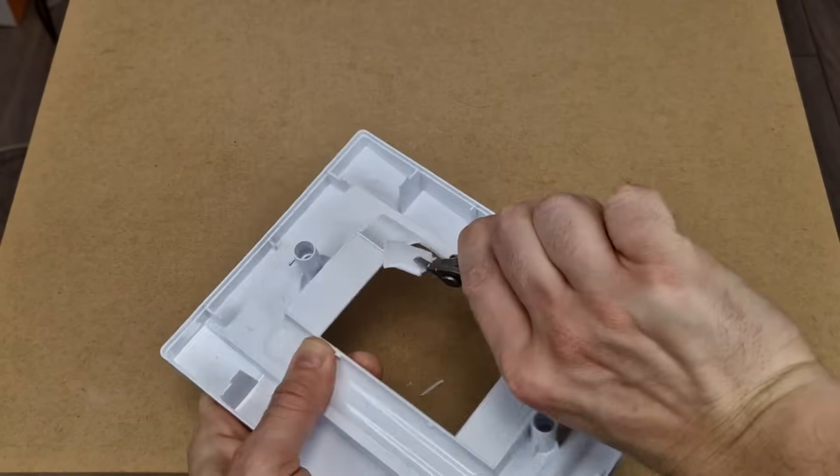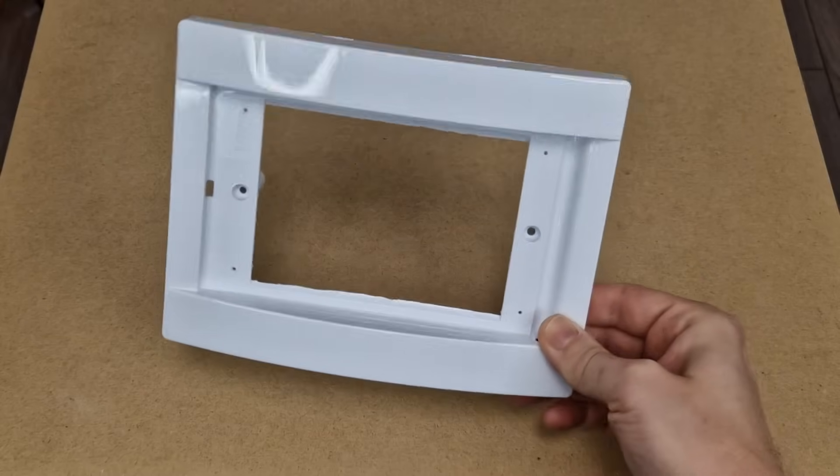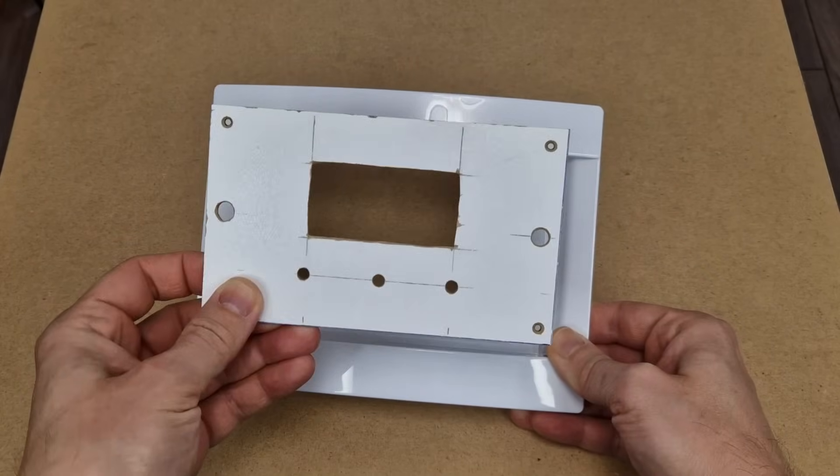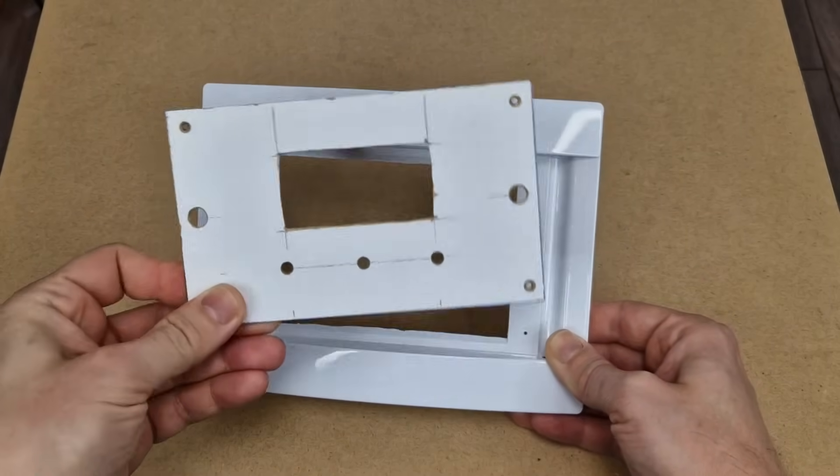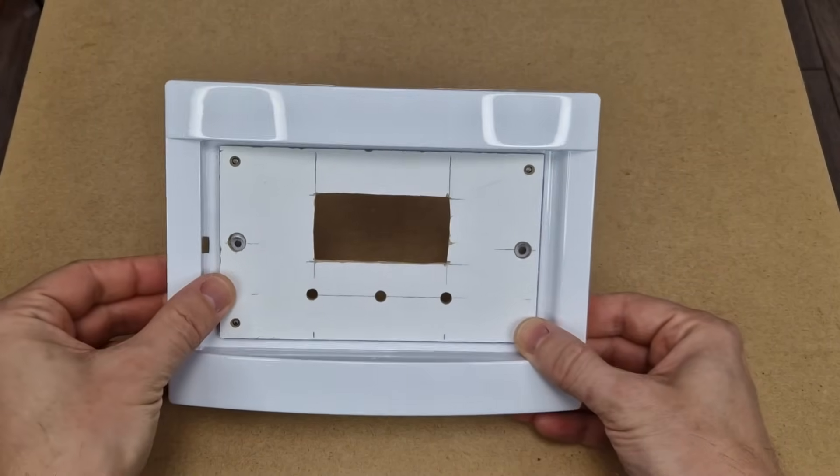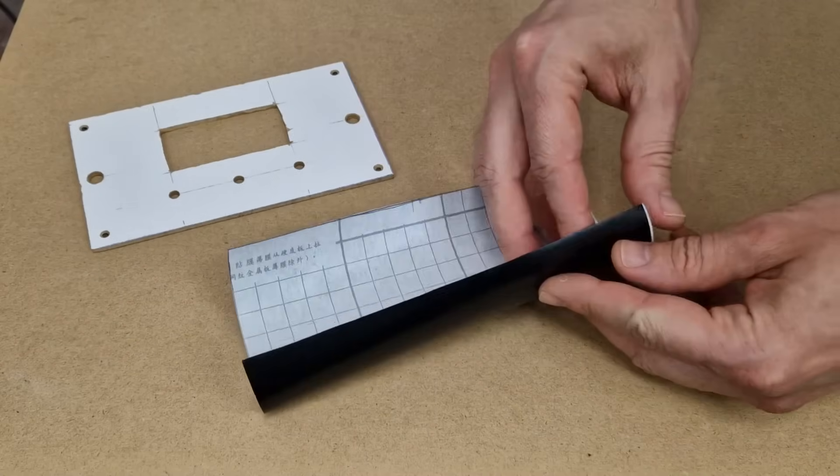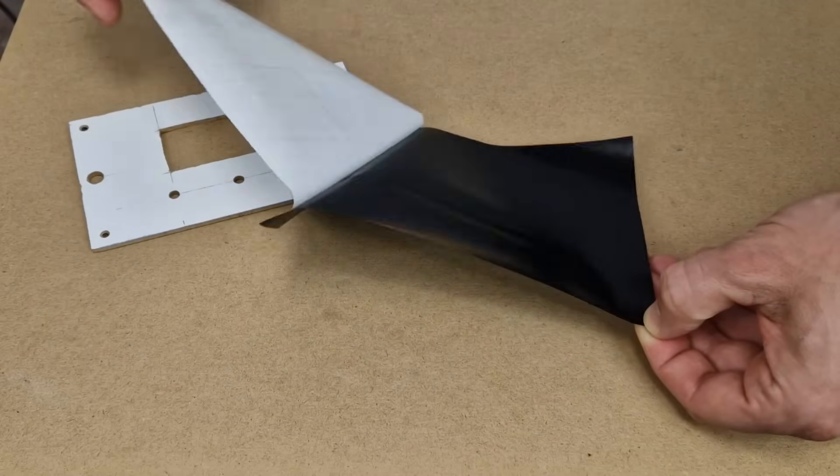First, I will remove the unnecessary plastic. It's clean now. Next, I need a piece of 3mm MDF. I've already made the holes and the cutout. To make this small panel look better, I will cover it in matte black vinyl.